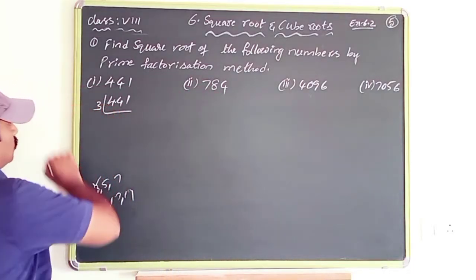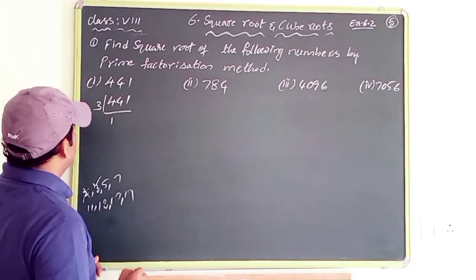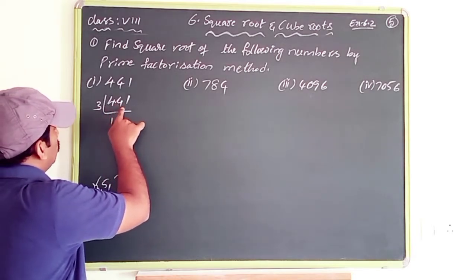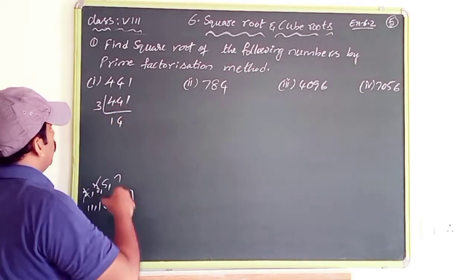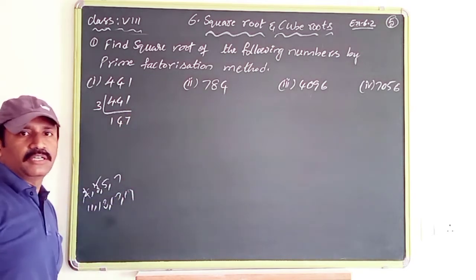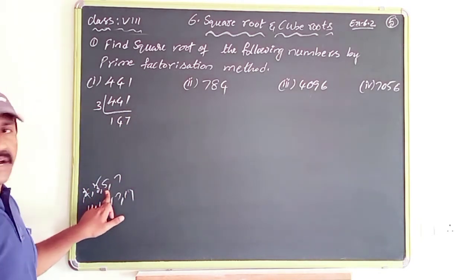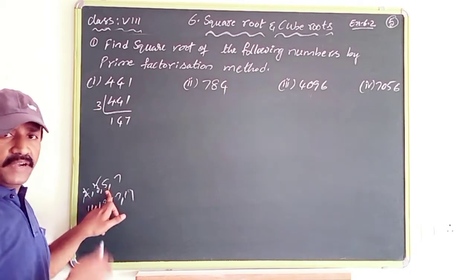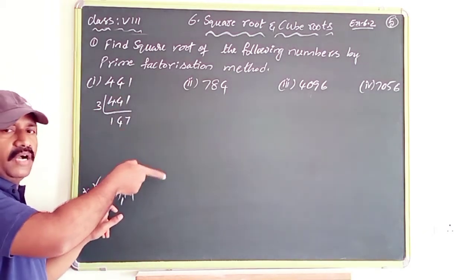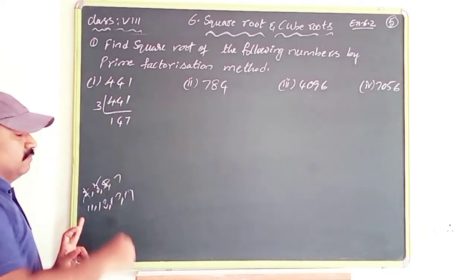So we divide 441 by 3, which gives 147. The last digit of 147 is 7 — not 0 or 5, so it is not divisible by 5. We check 7: 147 is divisible by 7, giving 21. Then 21 is also divisible by 7, giving 3. So: 441 = 3 × 3 × 7 × 7.